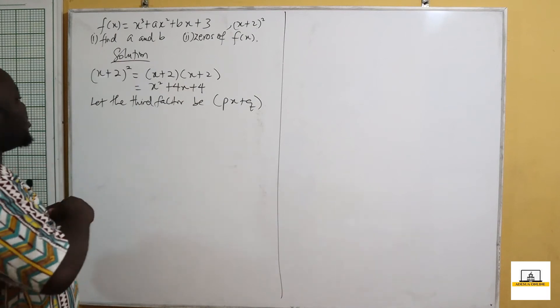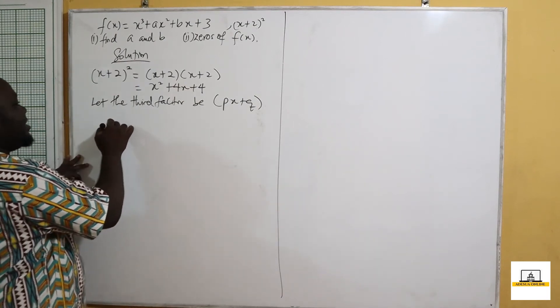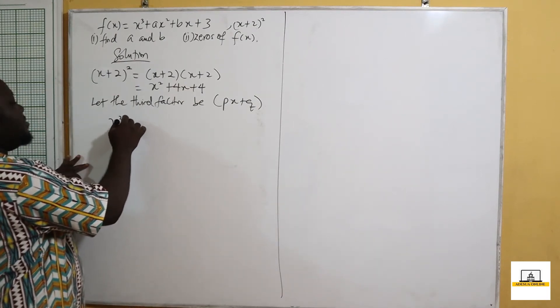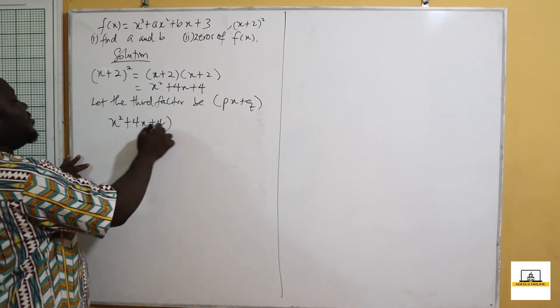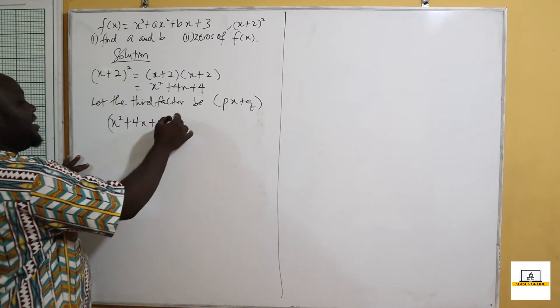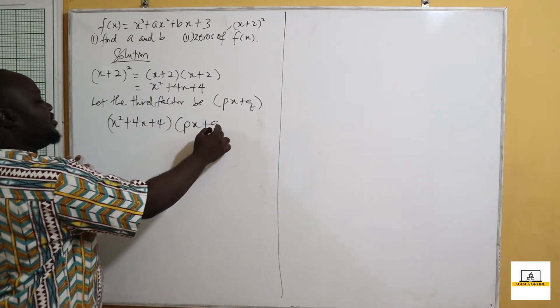So we are going to assume that the third factor is px plus q, where p and q are variables we are going to determine. If we multiply this quadratic factor by this third factor, we will have the complete factorization of the cubic function.